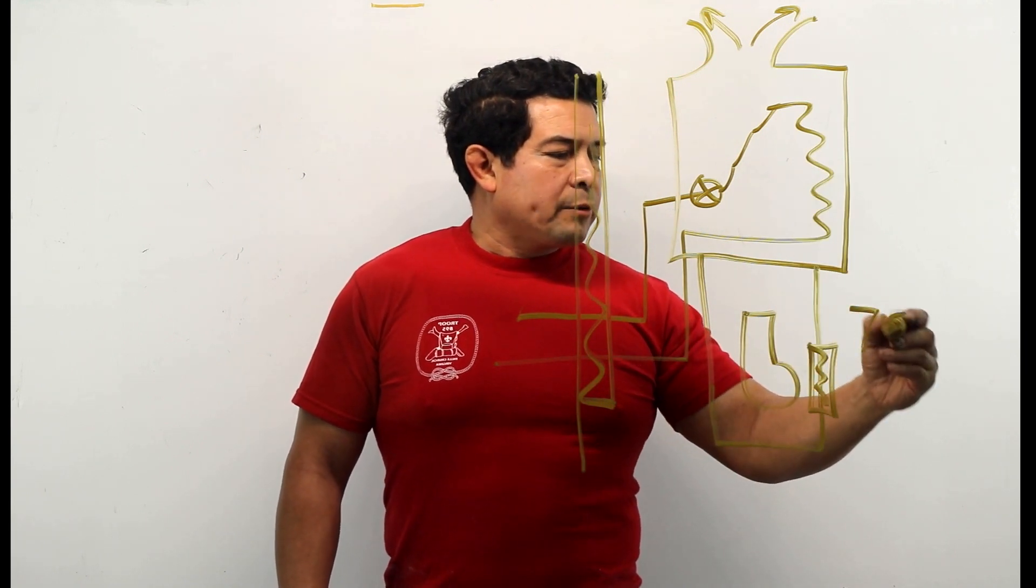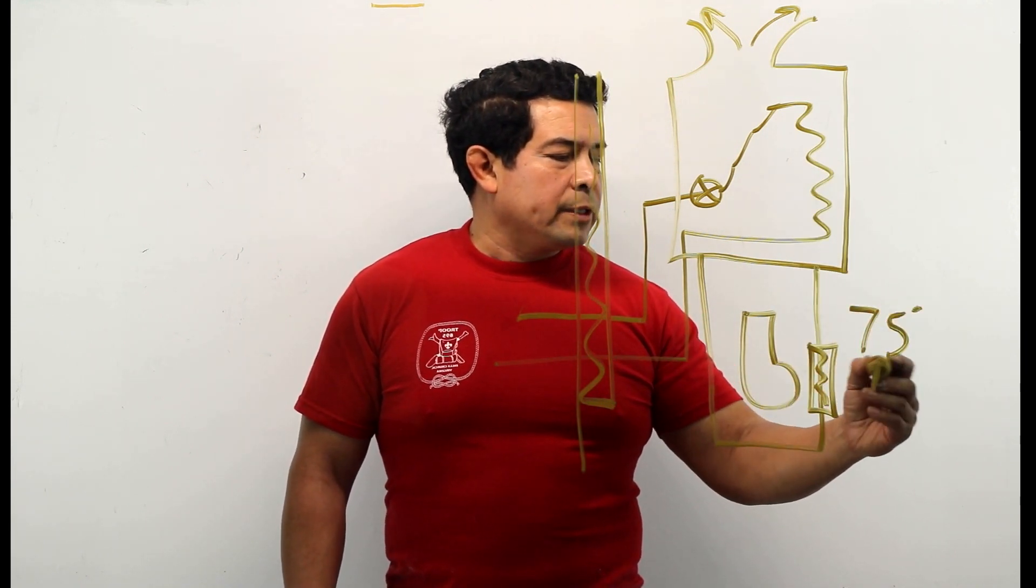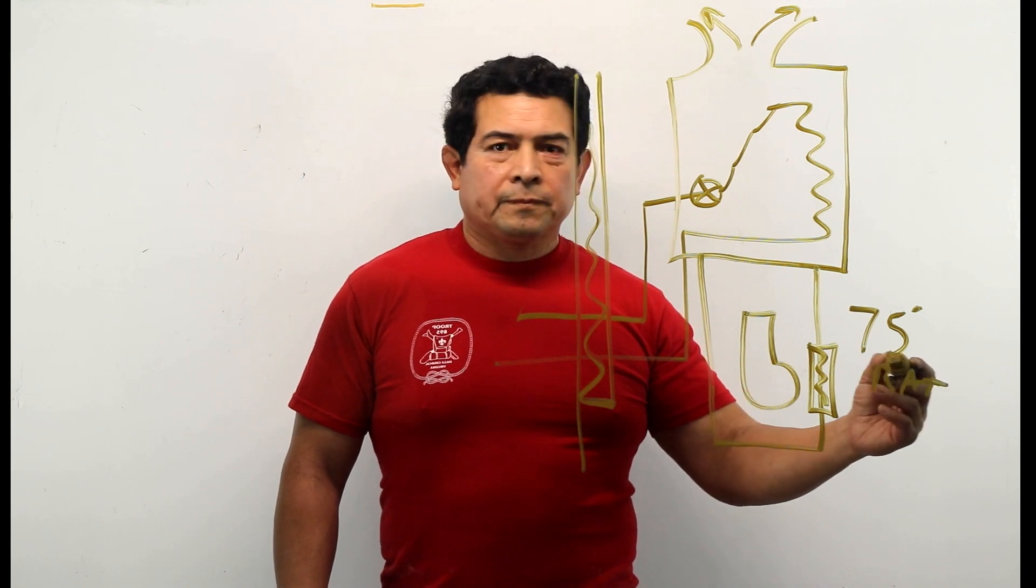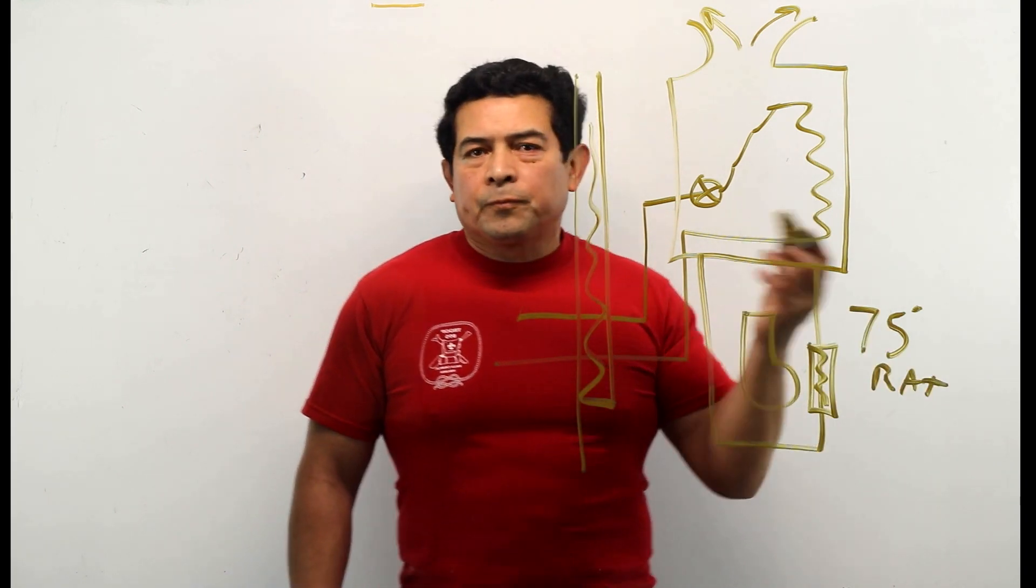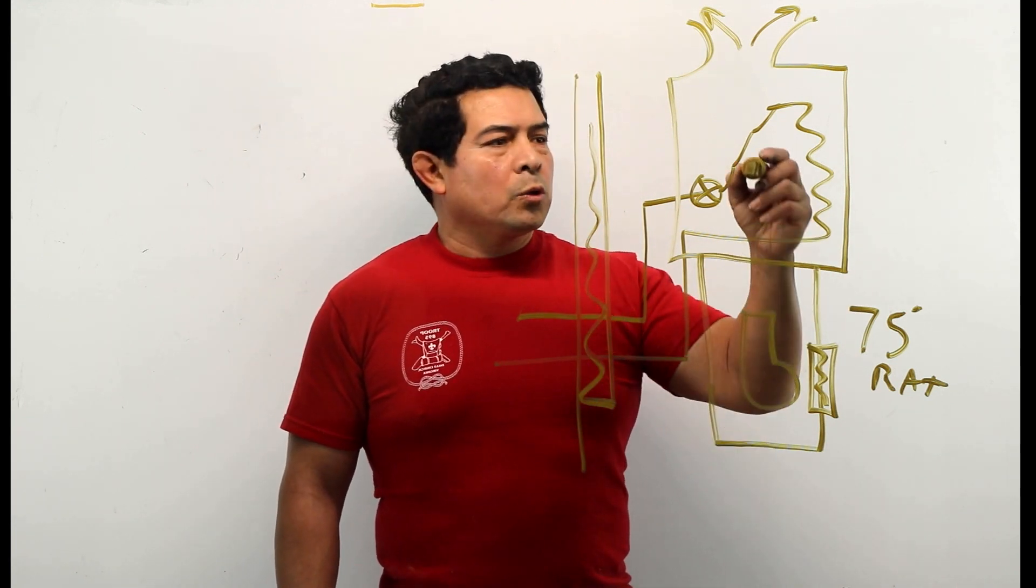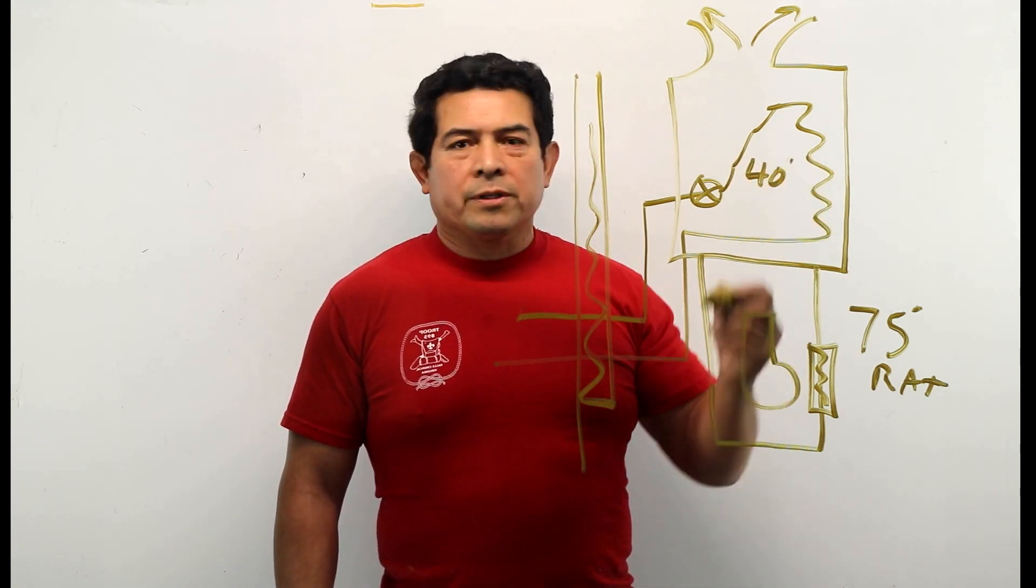Coming back we're going to have approximately 75 degree return air temperature. This coil, typically in an air conditioning system, we want the coil to be about 40 degrees.